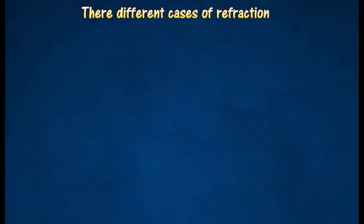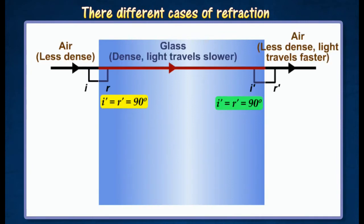There are three ways in which a ray of light can travel through two mediums. Case 1 is when the ray of light crosses the boundary between two different mediums at the right angle. In this case, no refraction occurs but the speed of light still changes accordingly.